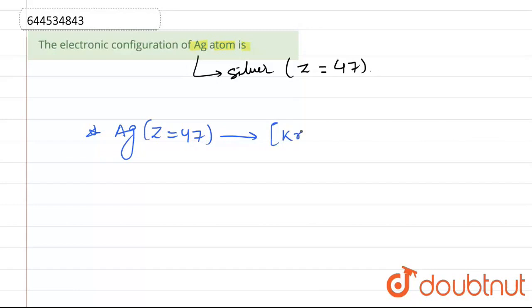That is actually KR, 4D10, 5S1. Right, 4D10, 5S1. So, here if you observe that it is a D block, D block element.